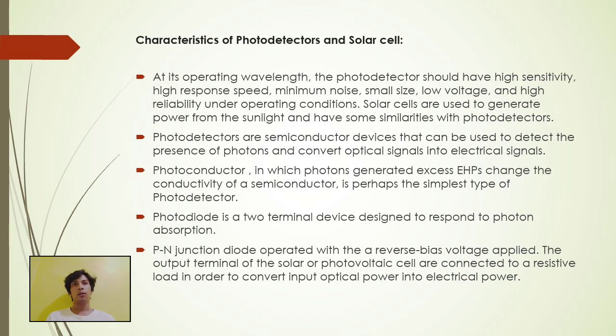So characteristics of photodetectors and solar cells. At its operating wavelength, photodetectors should have high sensitivity, high response speed, minimum noise, small size, low voltage, and high reliability under operating condition. Photodetectors are semiconductor devices that can be used to detect the presence of photons and convert optical signals into electrical signals.